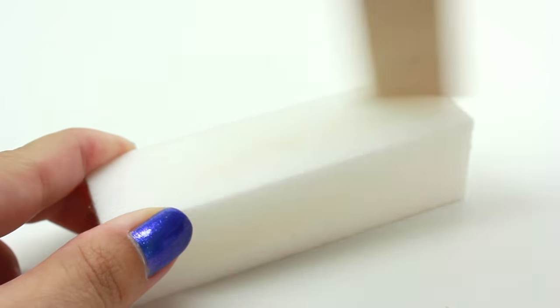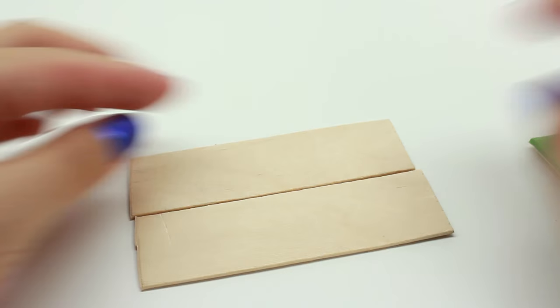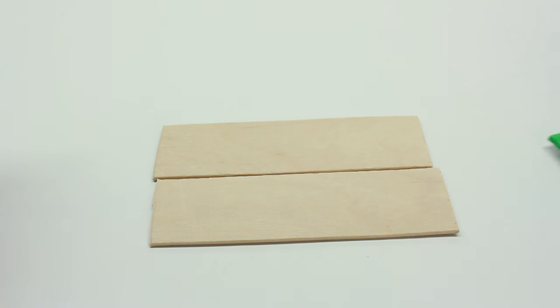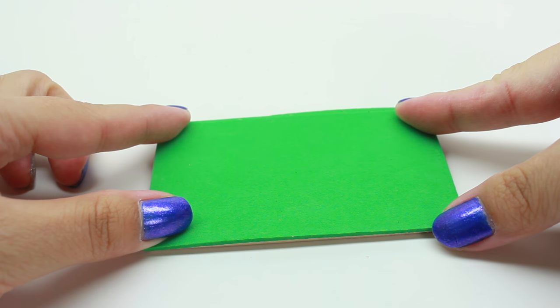Now measure out some foam paper because we're gonna put the foam paper on top. My foam paper is sticky so I can just stick it on, but if you don't have sticky foam paper, go ahead and glue it on.